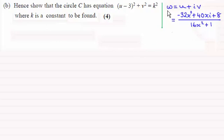So w we knew was equal to u + iv, and we also showed that it turned out to be equal to (-32x² + 40xi + 8) all divided by (16x² + 1).